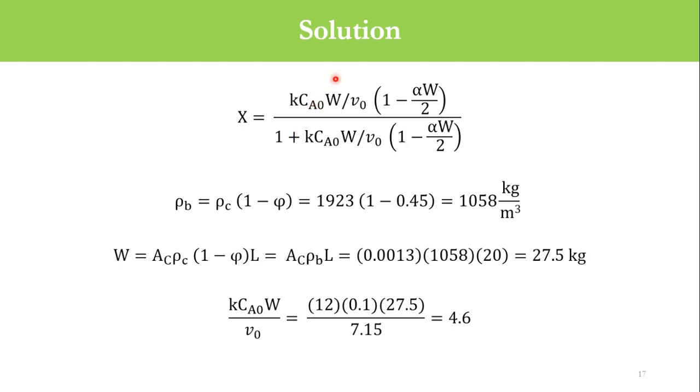Going to this part, kCA0W/V0, which is constant here and constant here, these two parts are identical. Accordingly, K is 12, C0 is 0.1, W is 27.5, and V0 is 7.15, so the answer is 4.6. We will put the value 4.6 here and 1 plus 4.6 in the brackets.